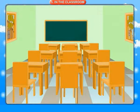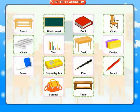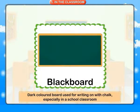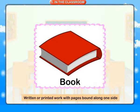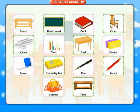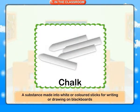In the classroom. Bench: a long seat of wood or stone. Blackboard: a dark colored board used for writing on with white chalk, especially in a school classroom. Book: written or printed work with pages bound along one side. Chair: a moveable seat with a back and sometimes with arms for one person to sit on. Chalk: a substance made into white or colored sticks for writing or drawing on blackboards.